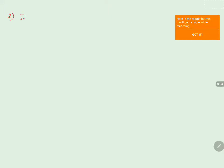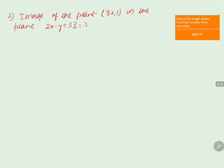The question asks for the image of the point (3, 2, 1) in the plane. The plane equation is given by 2x minus y plus 3z equals 7. We need to find the image of the point (3, 2, 1) in the plane 2x minus y plus 3z equals 7.